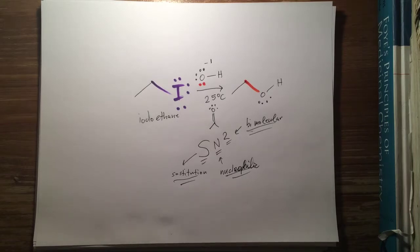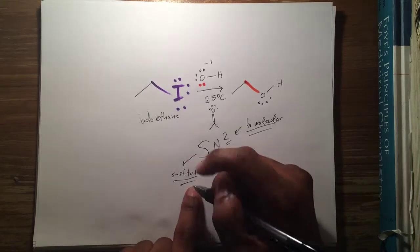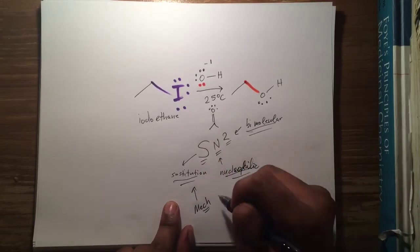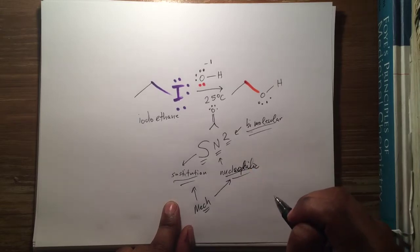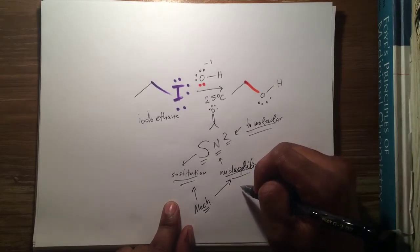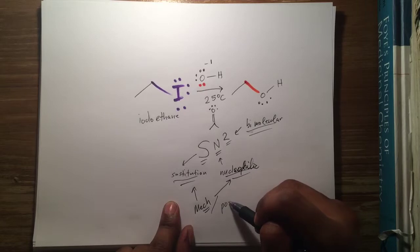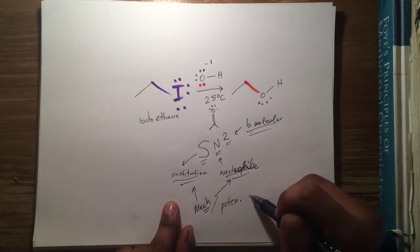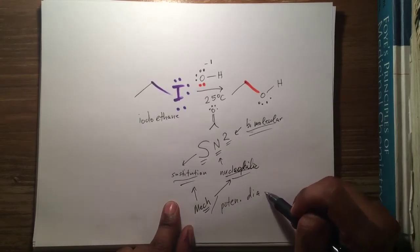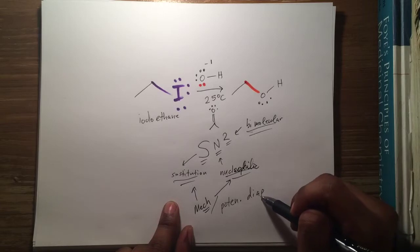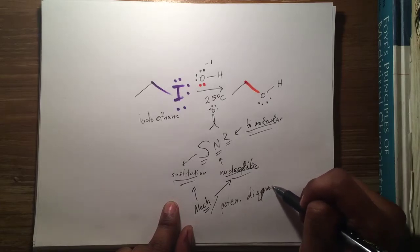The substitution part is going to be explained in the mechanism. The nucleophilic part is also going to be explained in the mechanism. Both the substitution and nucleophilic parts are going to be explained by the mechanism and the potential energy diagram we'll draw related to the SN2 reaction. The potential energy diagram gives you a graphical representation of how the potential energy of the SN2 reaction looks.